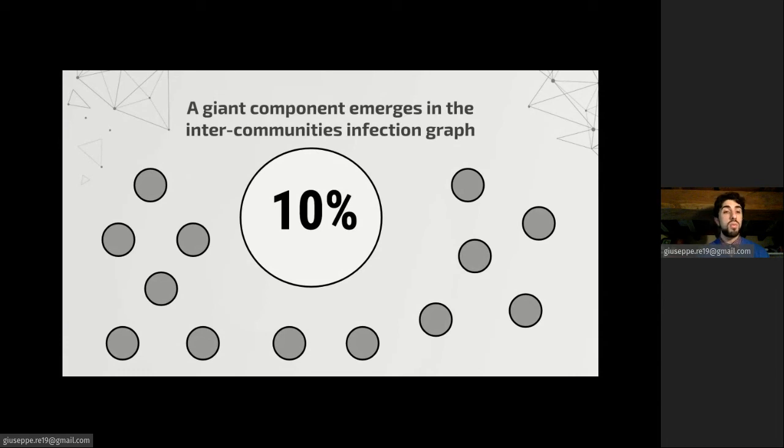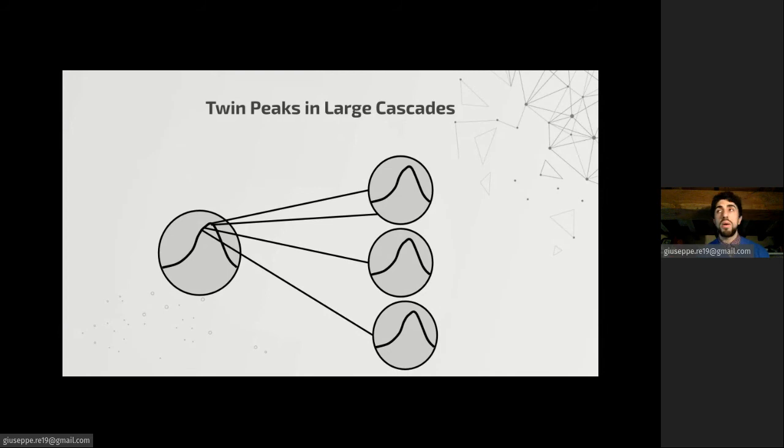So with constant probability, we end up starting in this giant component. And when we are there by well-known properties of random graphs, there is sparsity. So the peak given by the first community is separated from the peaks given by the other communities, and this gives us the twin peaks.